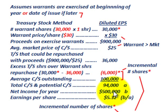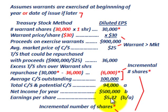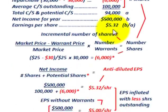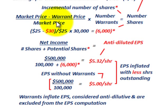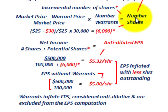With net income of $500,000 divided by the 94,000 total shares after factoring in the anti-dilutive warrants, we get earnings per share of $5.32. Going through the logic above, we could also use a shortcut formula: take the market price, subtract the warrant price from it, divide by the market price, then multiply by the number of warrants — that gives you the incremental number of shares for calculating diluted earnings per share.